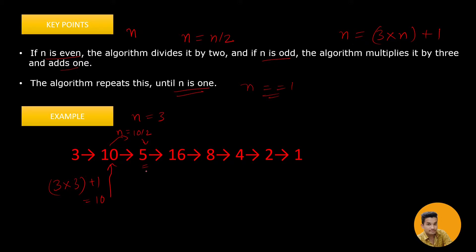5 is an odd number, so we multiply it by 3 and add 1, giving us 16. 16 is an even number, so we divide it by 2, resulting in 8. We keep doing this until the number becomes 1. We also need to display all these numbers.